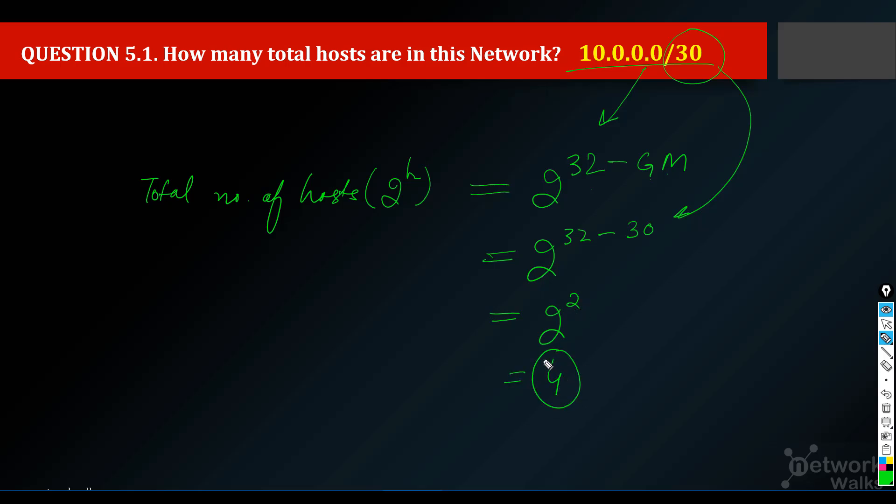So 4 is actually total number of hosts, but this includes the first and last. The hosts will be 10.0.0.0, 10.0.0.1, 10.0.0.2, and 10.0.0.3. So out of these, the first one is unusable and the last one is also unusable, which means we are left with two.